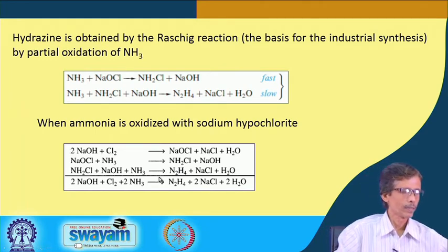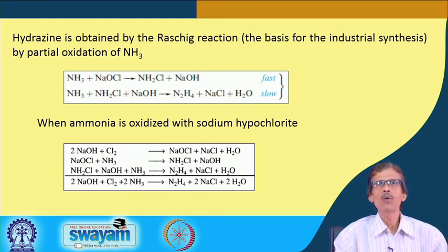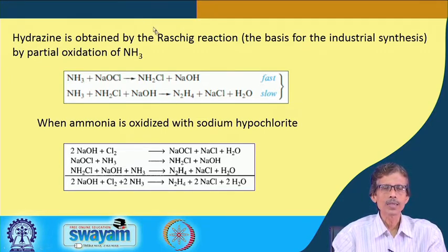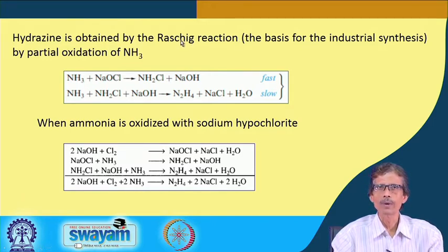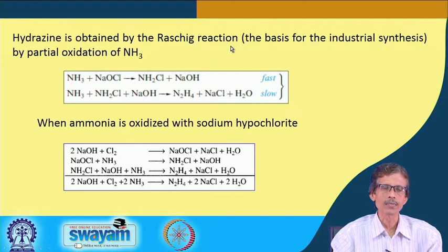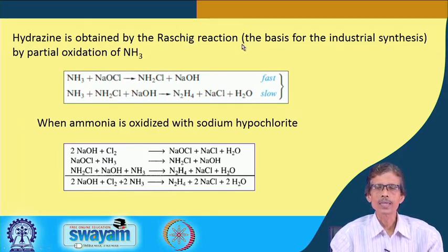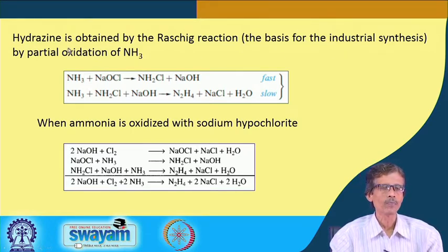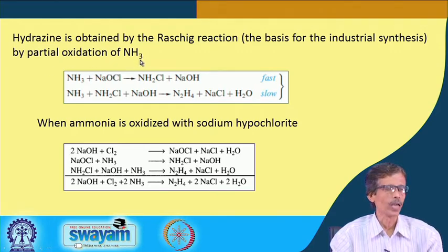Making hydrazine industrially is therefore a typical task. One such process is the Raschig reaction — well known, very famous, and in use for about 100 years, yet still very useful for making hydrazine. The Raschig reaction is essentially the basis of industrial hydrazine synthesis, where we carry out a partial oxidation of ammonia.